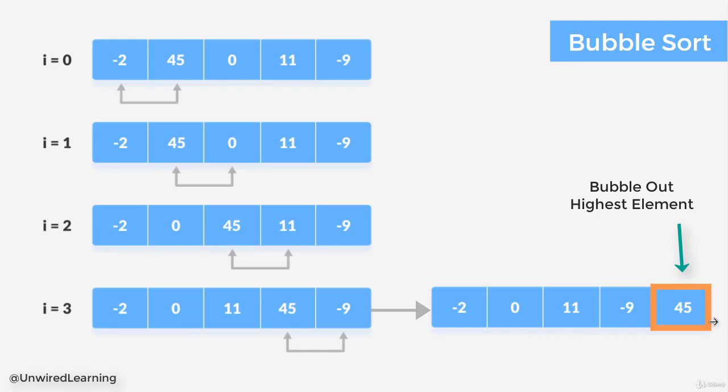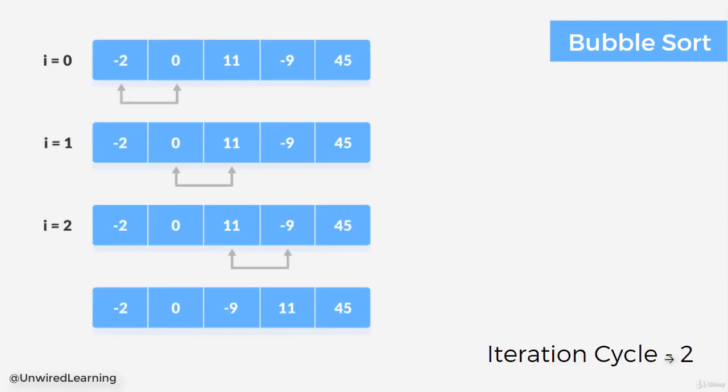Now with our next iteration cycle we are going to perform these same steps, but only with these four. This element is sorted and we know this is the highest one. So let's start our comparison with second iteration cycle. In our second cycle let me compare index 0 with index 1, no swapping.